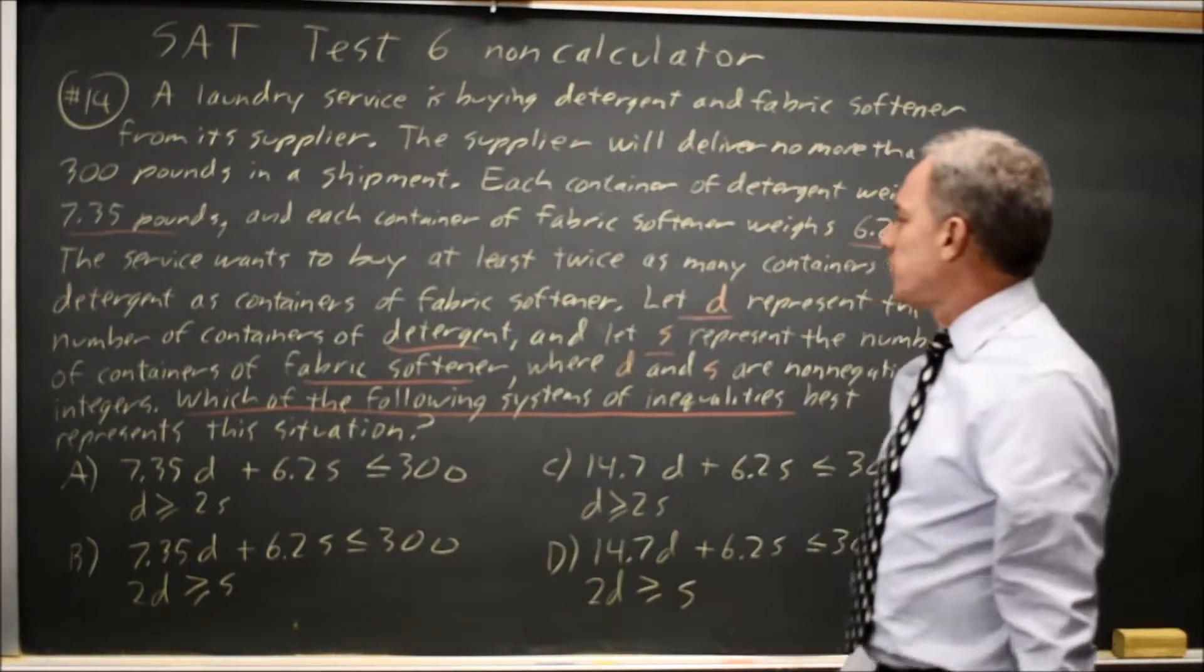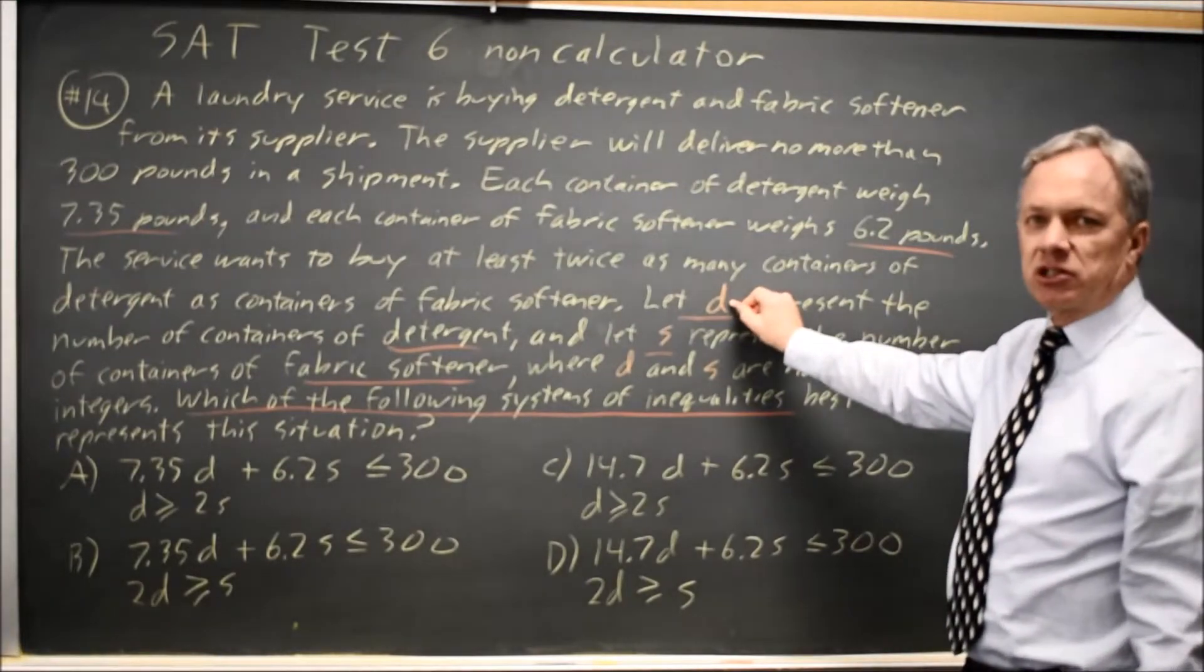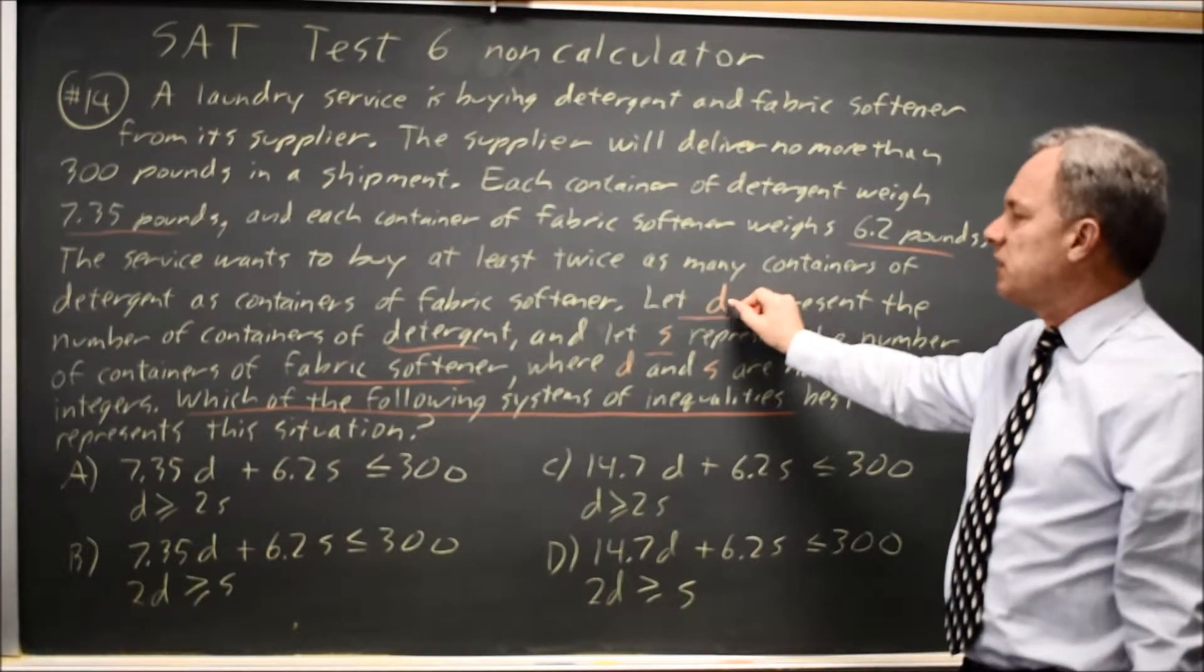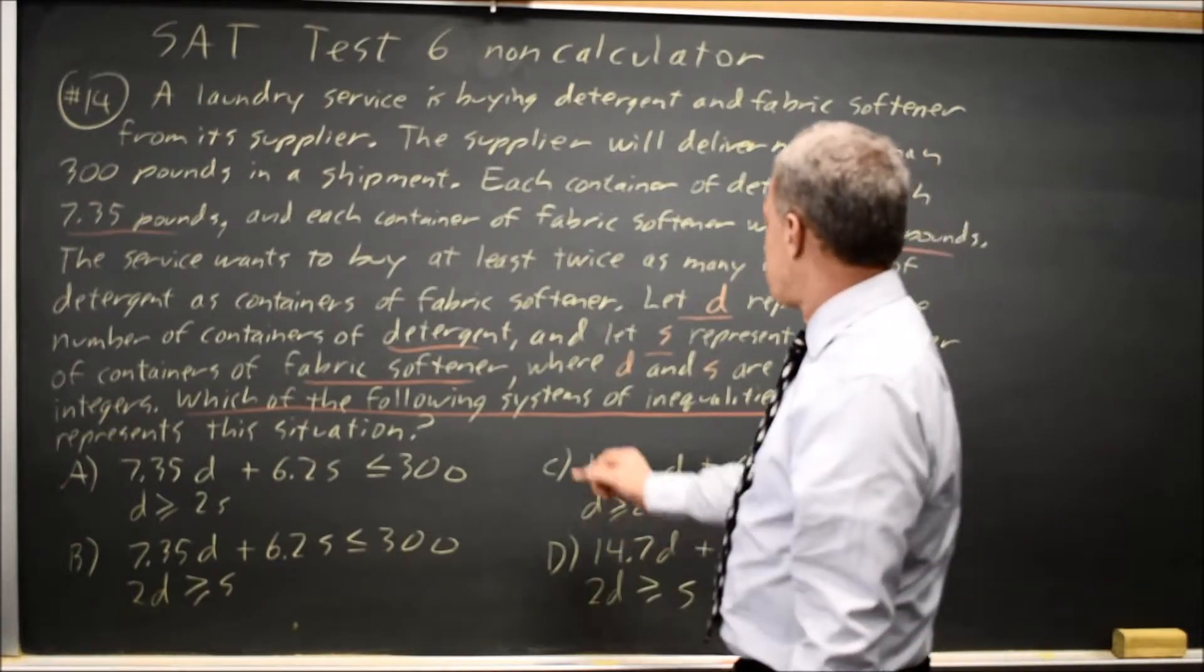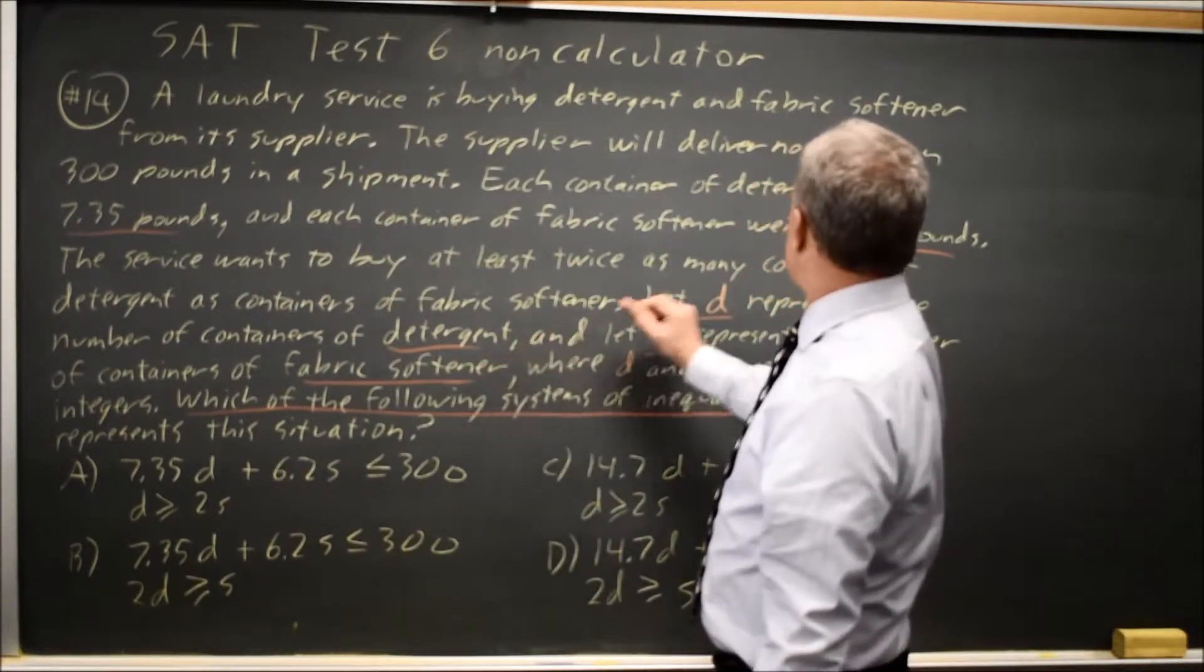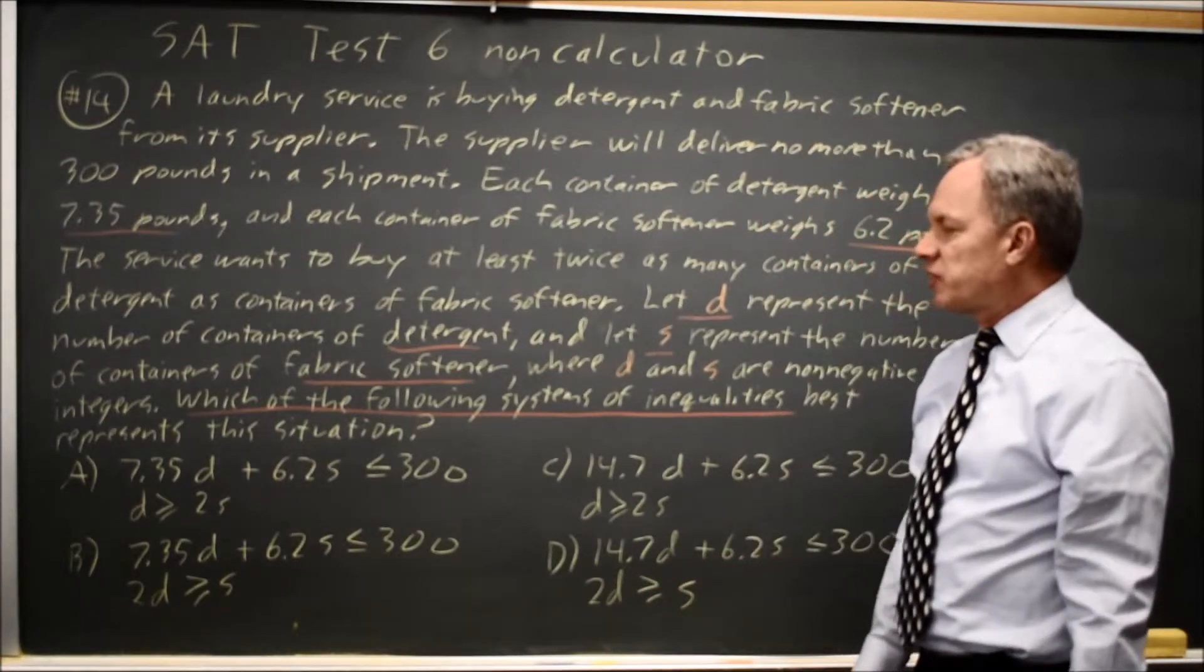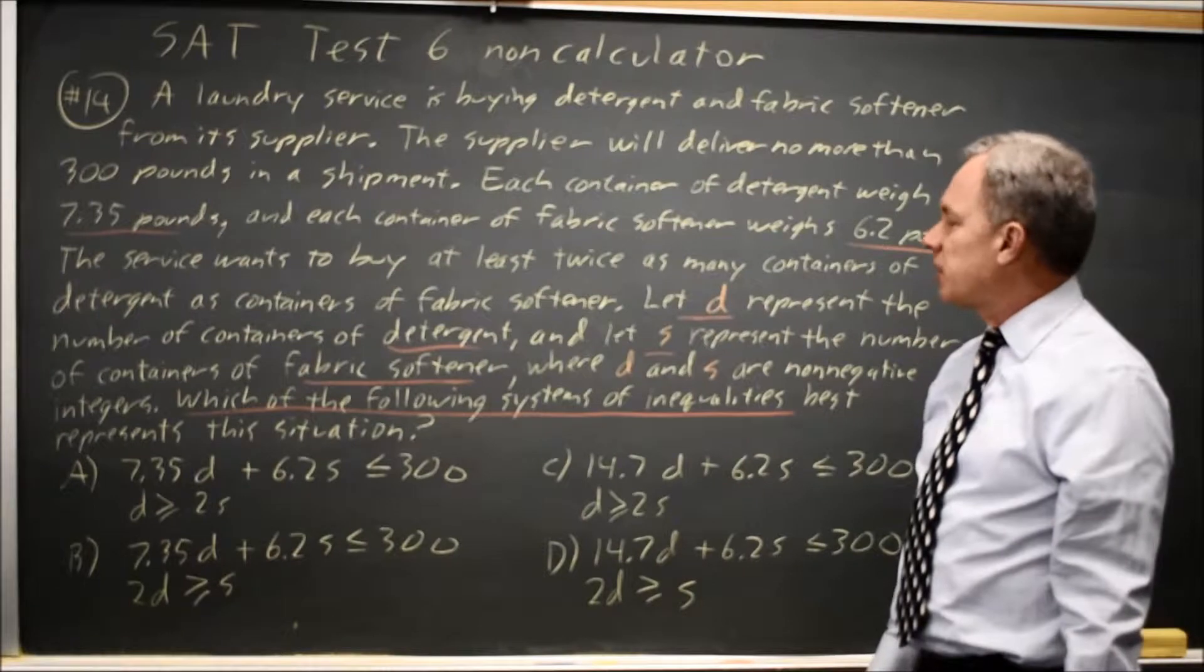So the total weight of a shipment would be the weight of detergent times the number of detergent is 7.35D plus the weight of fabric softener times the number of fabric softener, which is 6.2S. And that's 7.35D plus 6.2S.